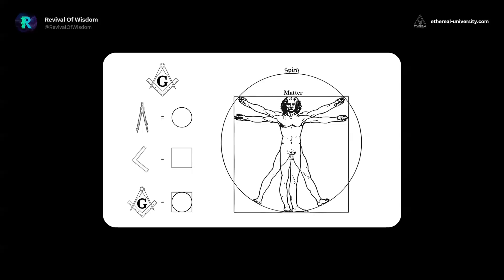We see this with Leonardo da Vinci — with the circle representing the spirit, the void, the womb of creation, and matter, which is the body. This is the soul in matter, infinite potential in matter. This represents spirit over matter, the architect of reality — zeros and ones, spirit and matter. This is all the same thing.